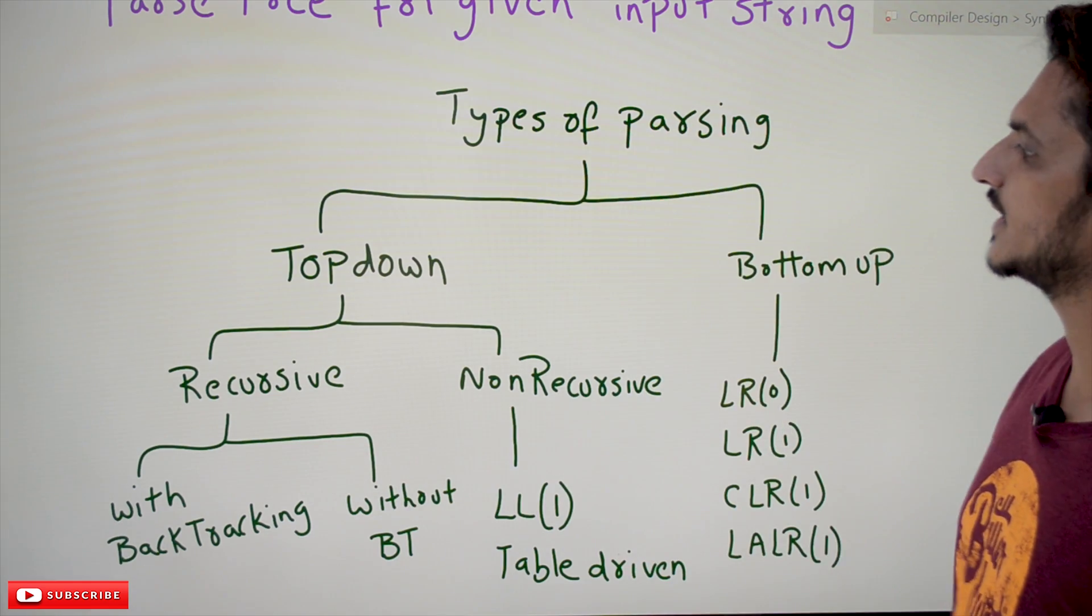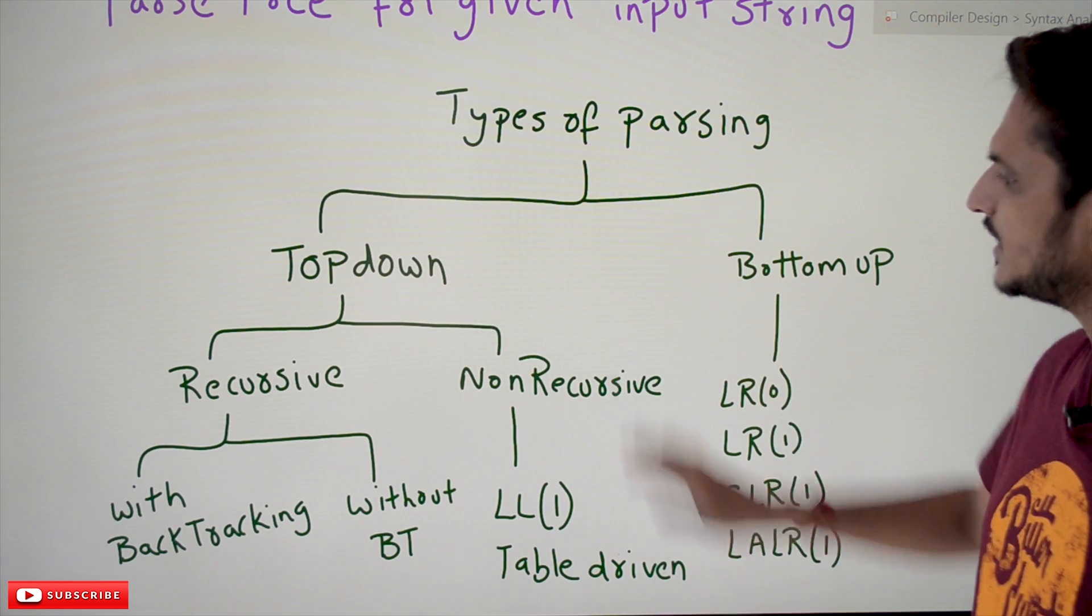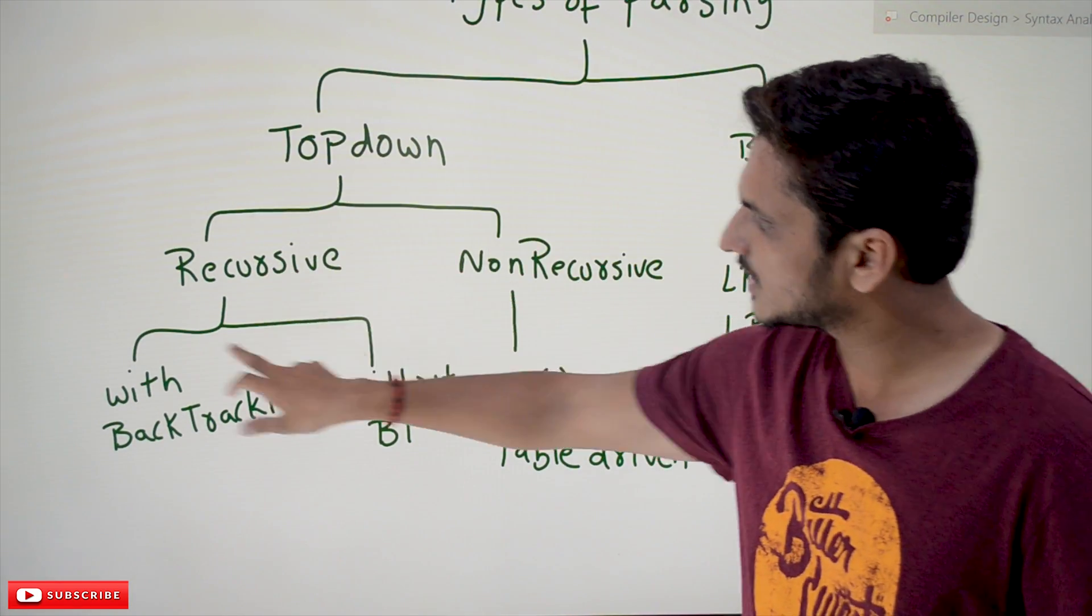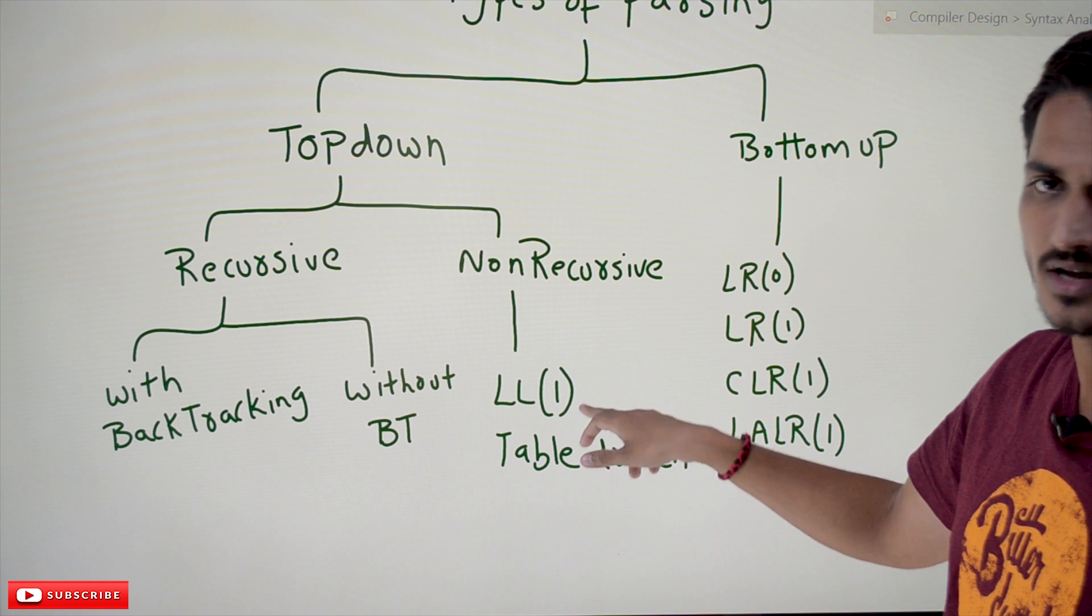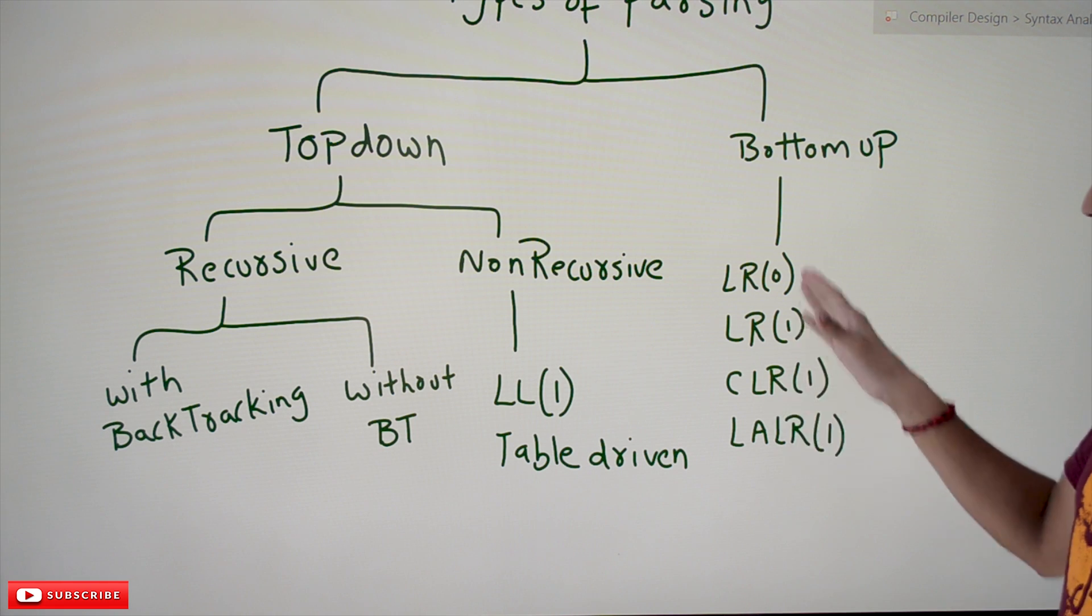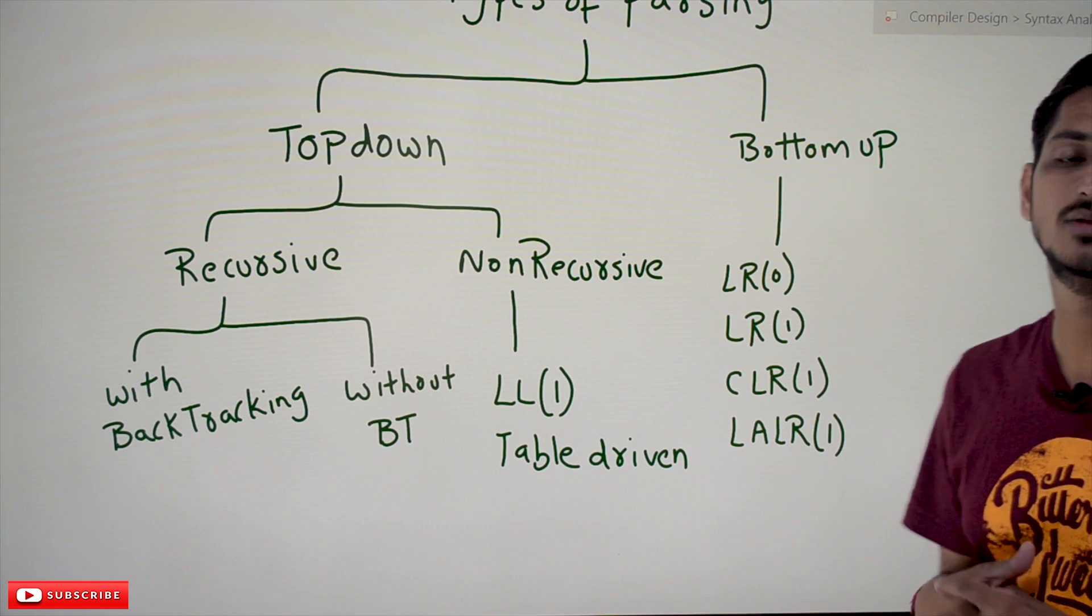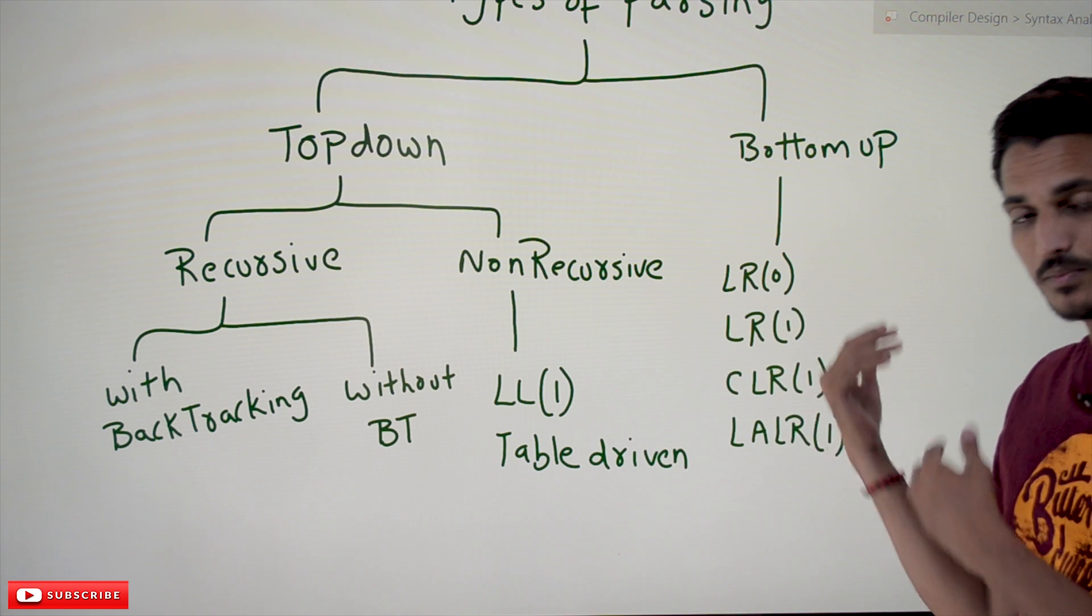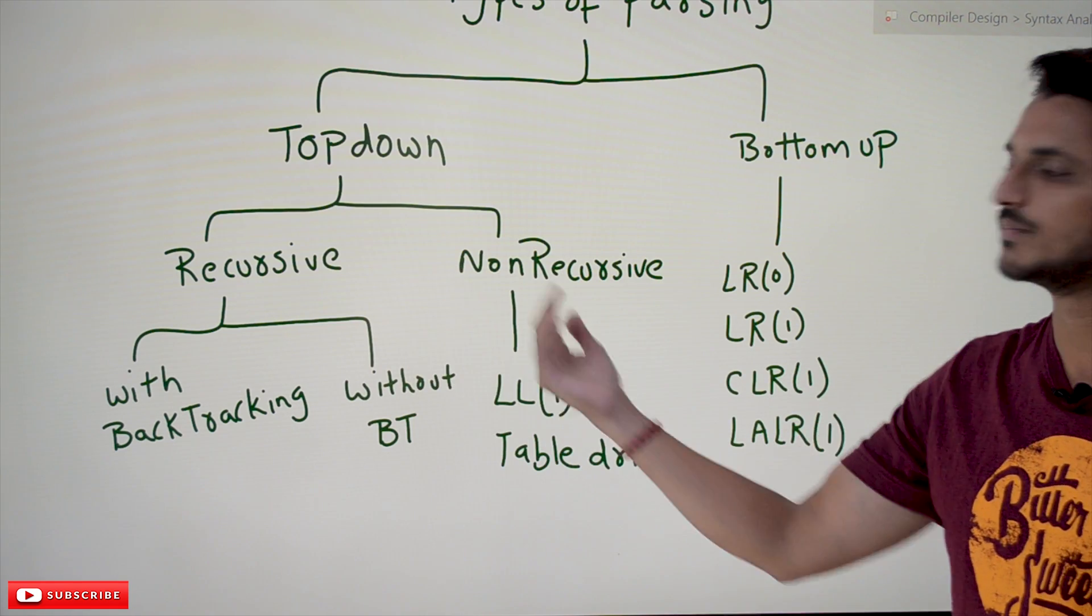Different types of parsing techniques are there: top-down and bottom-up approach. There are mainly two of them, top-down and bottom-up. In the top-down we have two divisions: recursive and non-recursive. In the recursive we have two divisions: with backtracking and without backtracking. In the non-recursive we have LL(1), which we call as a table-driven method also. In the bottom-up we have these four techniques: LR(0), SLR(1), CLR(1), and LALR(1). So all these techniques—what are the advantages, what are the disadvantages, how to overcome them, how bottom-up parsing helps us in overcoming the disadvantages found in top-down approach—we will go step by step in our coming classes.